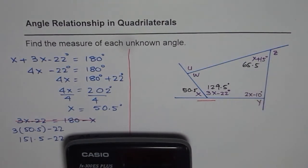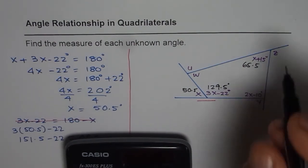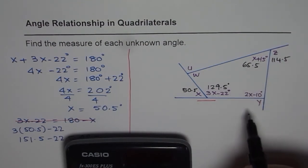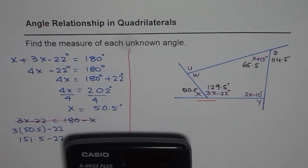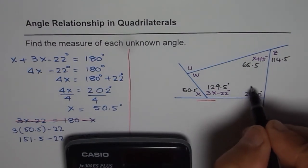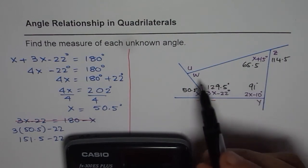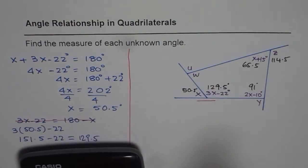you can find z as 180 minus 65.5. So write it in decimals, it will be 114.5. So likewise, you can calculate all the angles. This is 2 times x, so it is 2 times 50.5 minus 10 equals to 91 degrees. So you get all these angles. To get W, W should be equal to what?